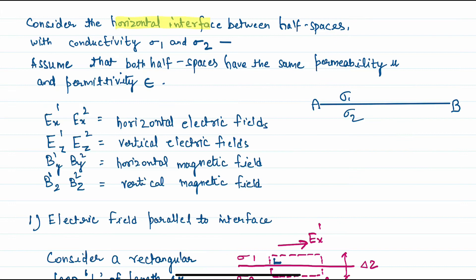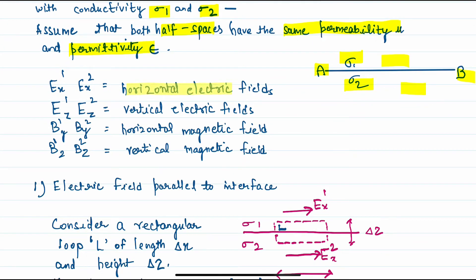Here we consider the horizontal interface AB between the half spaces. This is the upper half space and this one is the lower half space, with conductivity sigma1 and sigma2 respectively. Assume that both half spaces have the same permeability and permittivity. Now consider the horizontal electric field Ex1, Ex2, vertical electric field Ez1, Ez2, horizontal magnetic field By1, By2, and vertical magnetic field Bz1 and Bz2.